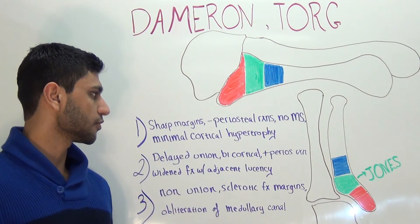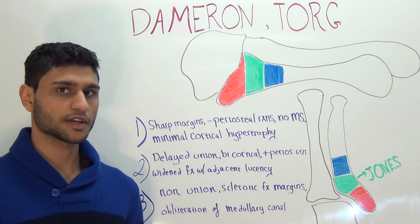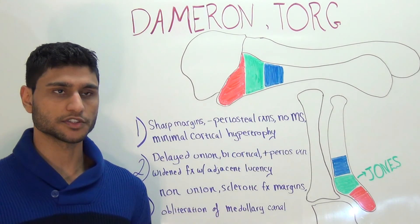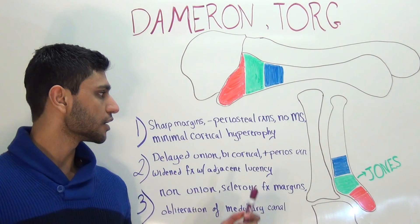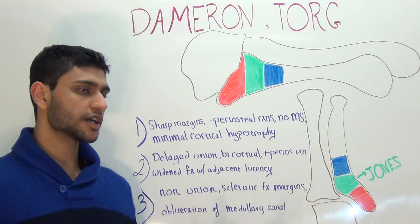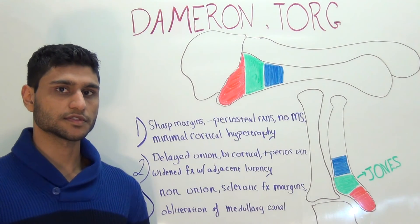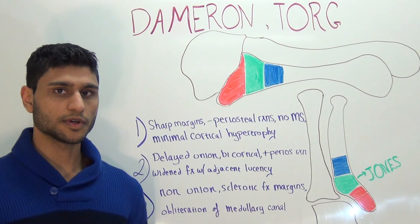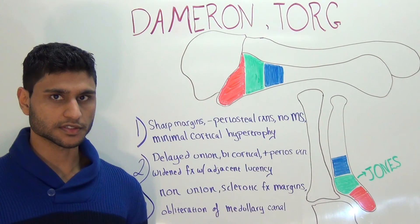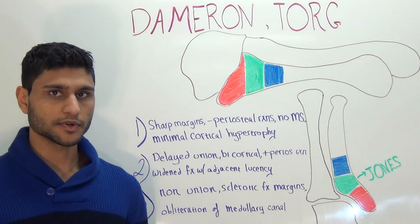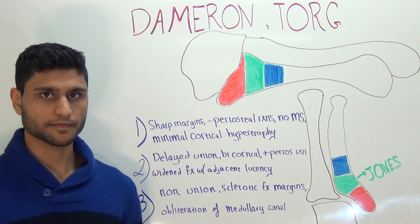A Torr type 1 fracture has sharp margins. There are no periosteal reactions, no medullary sclerosis, and minimal cortical hypertrophy.